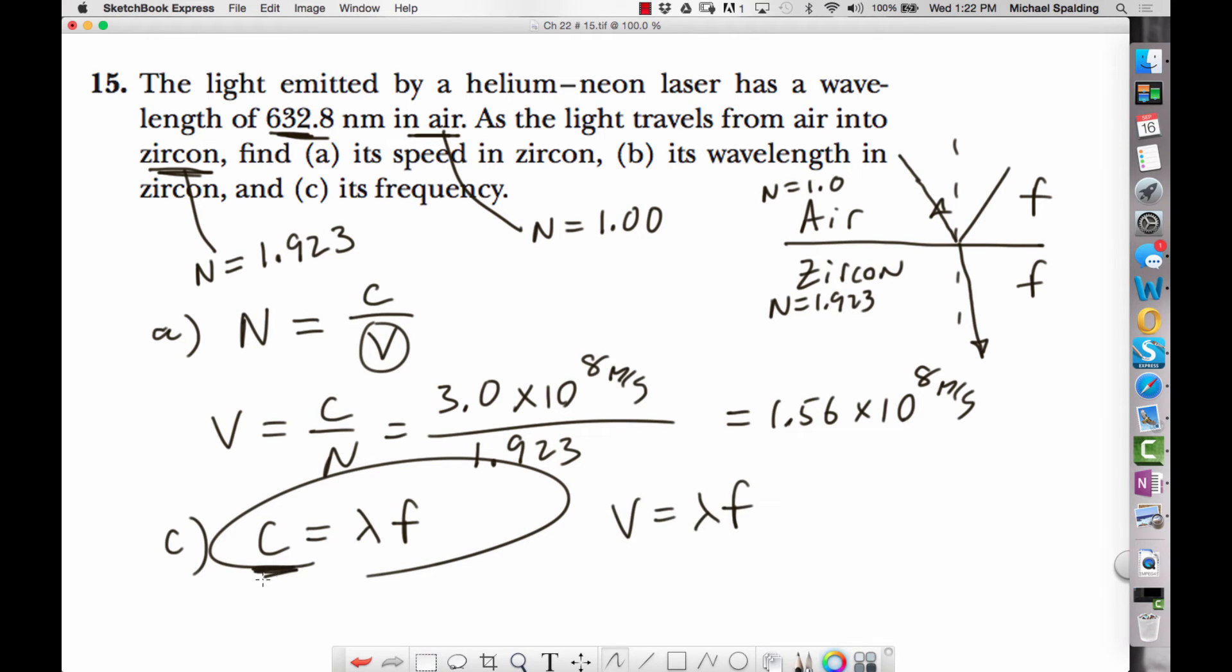Notice I put C because air, for all practical purposes, is what? Air, for all practical purposes, we can treat it as a vacuum. So we're saying the speed of light in air is just going to be C.